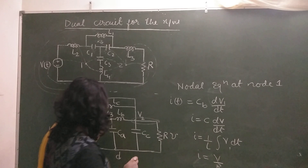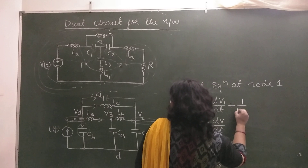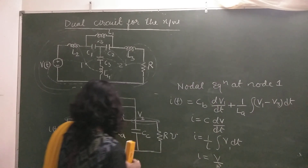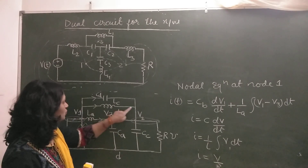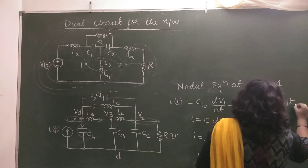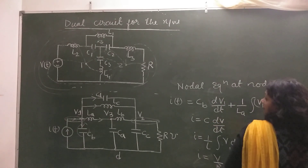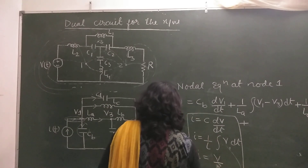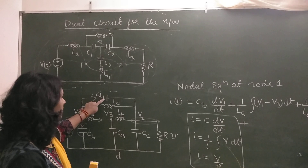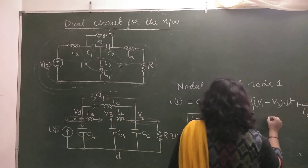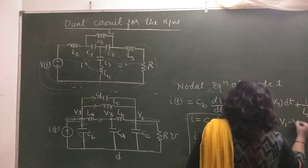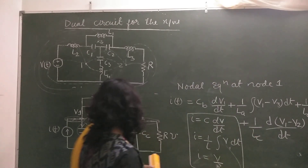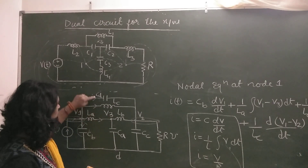At node V1, the incoming current is It. The outgoing currents are: CB·(dV1/dt) through the capacitor CB, then (1/LA)·∫(V1 − V3)dt through inductance LA between V1 and V3, then (1/LC)·∫(V1 − V2)dt through inductance LC, and CD·(d(V1 − V2)/dt) through capacitance CD. So there is 1 incoming and 4 outgoing currents at node V1.